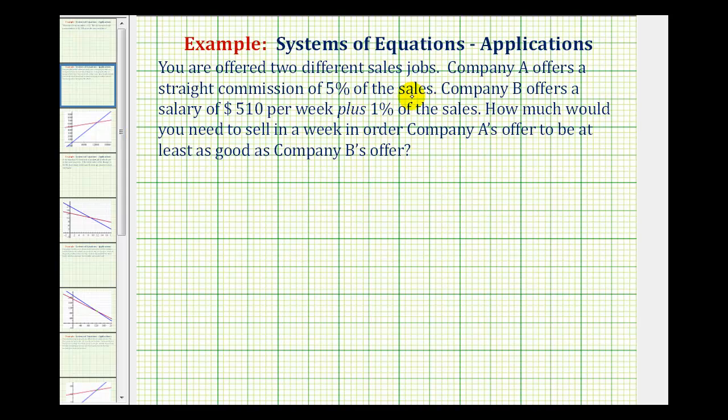You are offered two different sales jobs. Company A offers a straight commission of 5% of the sales. Company B offers a salary of $510 per week plus 1% of the sales. How much would you need to sell in a week in order for company A's offer to be at least as good as company B's offer?